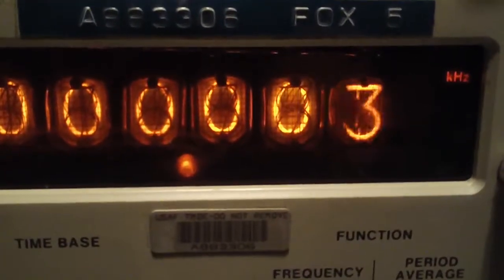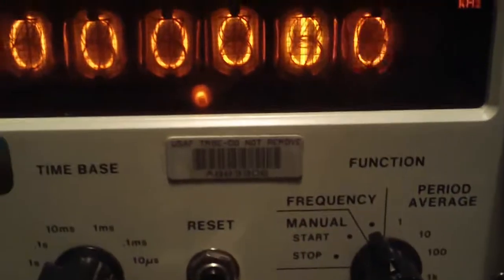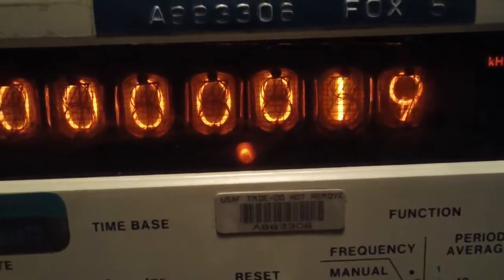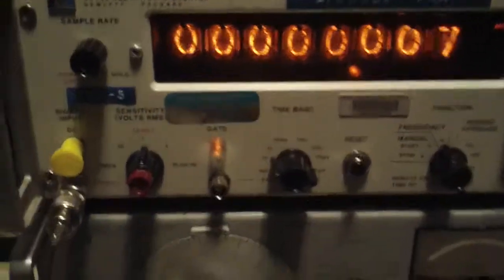And now you can see it counting up. So it's actually measuring the period and showing you the output here. Or either that or it's measuring zero crossings.